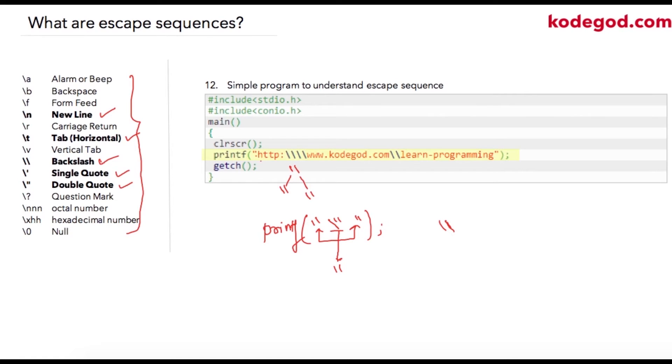So to print two slashes, we are required to provide four slashes. Similarly, these two slashes will be replaced by a single slash. My final result will be http colon slash slash www.codegod.com slash learn programming.